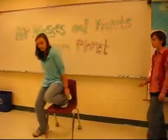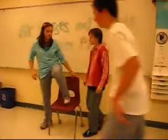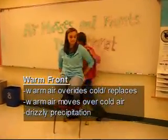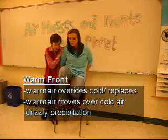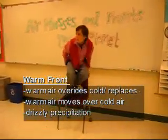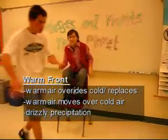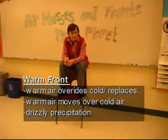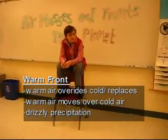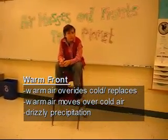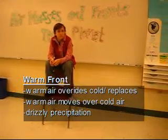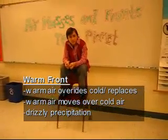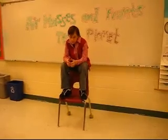Next, our warm front. The warm front moves very fast, so it pushes the cold air mass off, and the wind comes through. Warm air masses usually result in warm air and drizzly precipitation, and clear and warm weather.